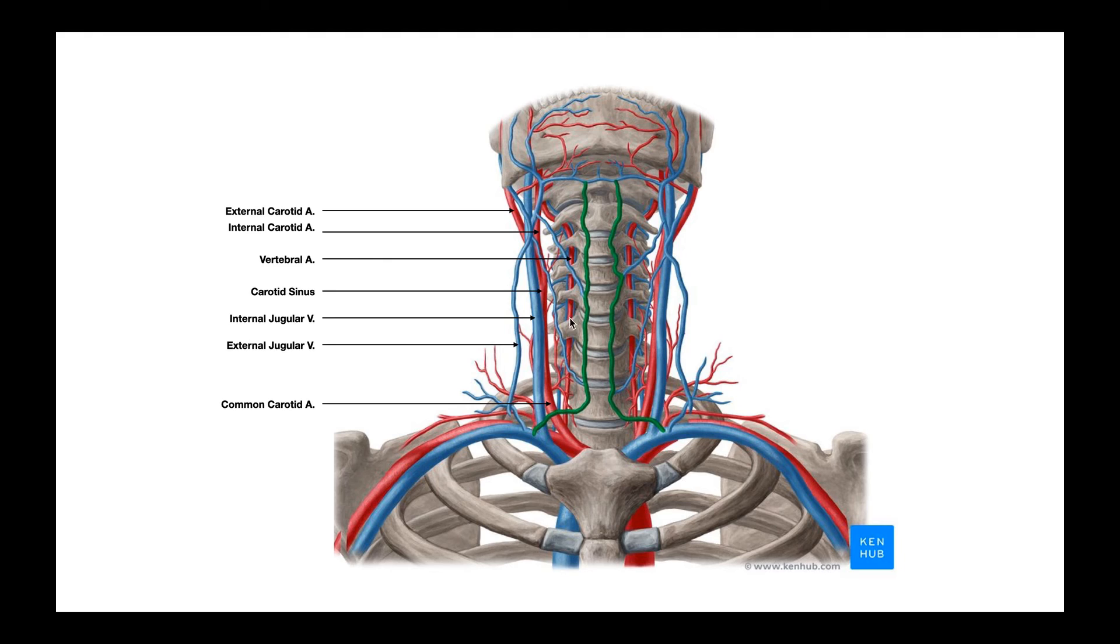The holes that they run through are called transverse foramina, but they're protected up here at C6 and above. Down here at the levels of C7 and T1, that artery, the vertebral artery is not as protected. And so a lower applied choke hold is going to be much more effective at compressing that vertebral artery as well.